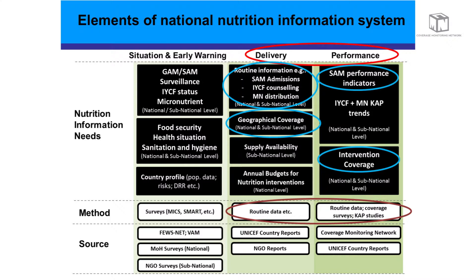On the situation and early warning side, you have your GAMs and prevalence rates, surveillance data, micronutrient status data, and breastfeeding rates. It would also be good to bring in nutrition-sensitive intervention data: food security, health, and WASH information. On the delivery side, there's the routine information — SAM admissions, IYCF counseling, and geographic coverage information. On the performance side, SAM performance indicators from routine data and intervention coverage data.